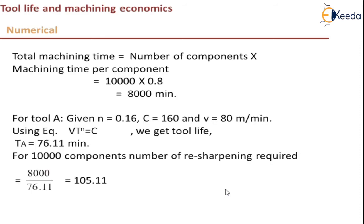Total machining time equals number of components multiplied by machining time per component. Machining time per component is 0.8 minutes, same for both tools, and we have 10,000 components, giving 8,000 minutes total. For Tool A, where N = 0.16, C = 160, and V = 80 m/min, using Taylor's tool life equation VT^N = C, we get tool life T_A = 76.11 minutes.